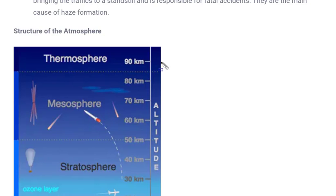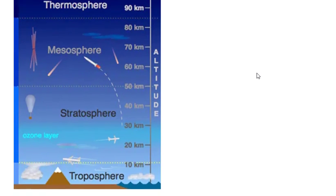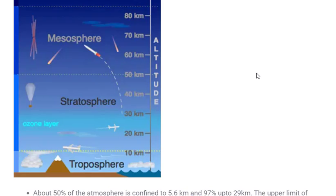To summarize the structure of the atmosphere: the bottommost layer is the troposphere, next is the stratosphere, then the mesosphere, and finally the thermosphere which is divided into the ionosphere and exosphere. The temperature in the thermosphere is very high, which is why it is named thermosphere.